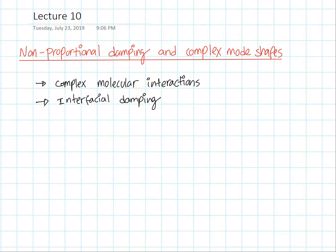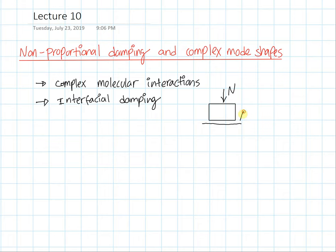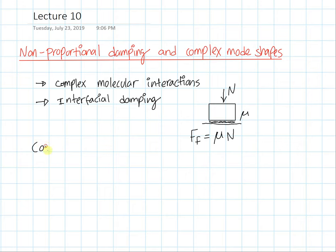If you recall from high school physics, whenever we talked about damping we always had some sort of mass with a normal force subjected to it and a substrate underneath. We introduced the concept of friction coefficient, which multiplied with the normal force gives us the friction force: F_friction = μ × N. This kind of friction or damping is very common in the real world and is typically referred to as Coulomb friction.